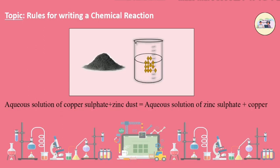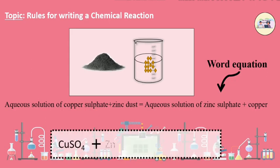This simple way of representing a chemical reaction in words is called a word equation. A word equation can be written in a further condensed form by using chemical formulae as follows: CuSO4 plus Zn gives us ZnSO4 plus Cu.